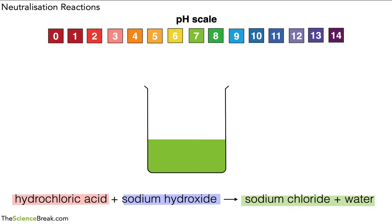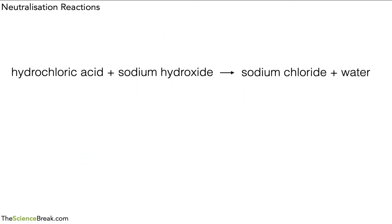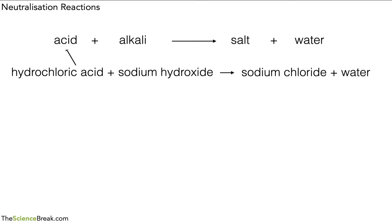Now what we need to be able to do is predict the names of the two substances we get when we react acid and alkali. We can use what's called a general equation, which looks like this: acid plus alkali react together to produce a substance called a salt and water. So in our example, hydrochloric acid is our acid, sodium hydroxide is our alkali, and when they react they produce a type of salt called sodium chloride plus water.